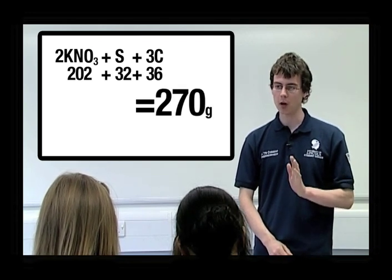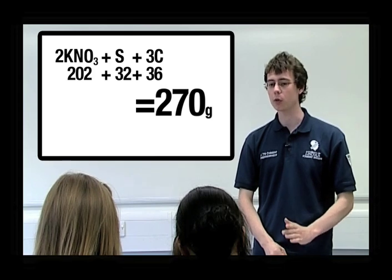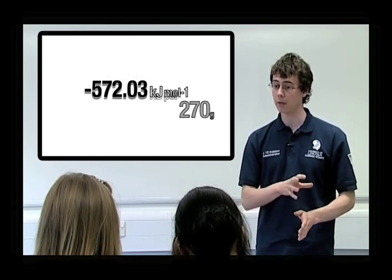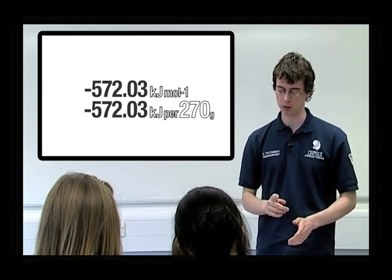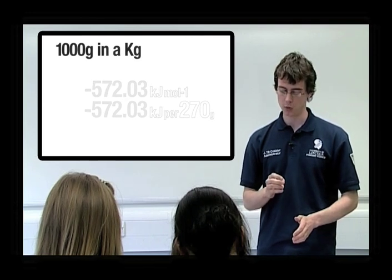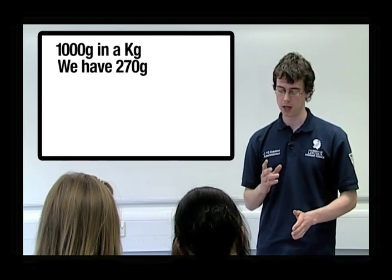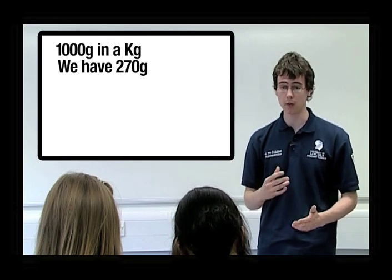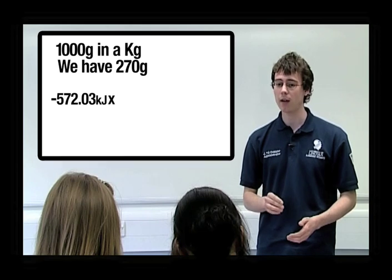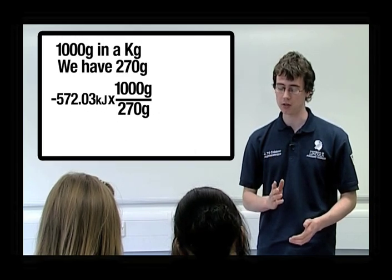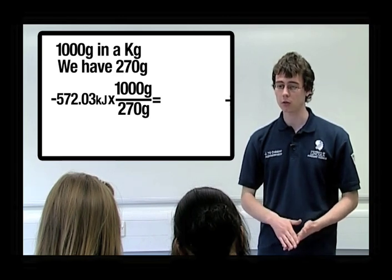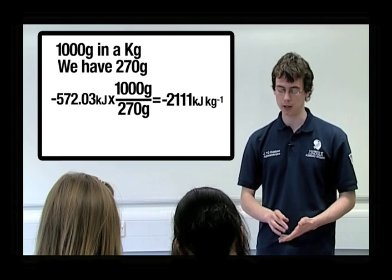Groovy. So, we now know that minus 572.03 kilojoules per mole is the equivalent to that value, but per 270 grams. We also know that there are 1000 grams in a kilogram, and we have 270 grams. So, we take the energy per mole, which is minus 572.03 kilojoules, and we multiply that by 1000 grams divided by 270 grams. This gives us a value of minus 2,111 kilojoules per kilogram.